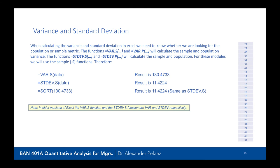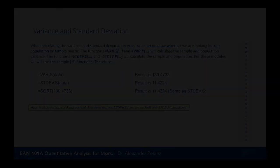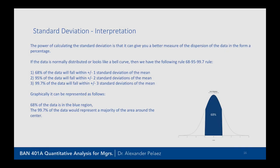In the example shown, our sample variance is 130.47 and our sample standard deviation is 11.42. If you take the square root of the variance result of 130.47, you get exactly the same result as STDEV.S — 11.42.